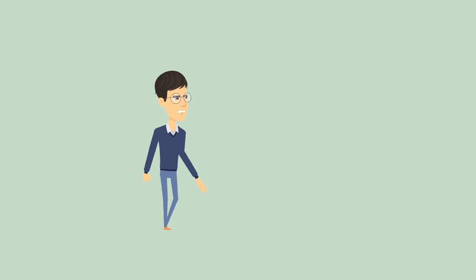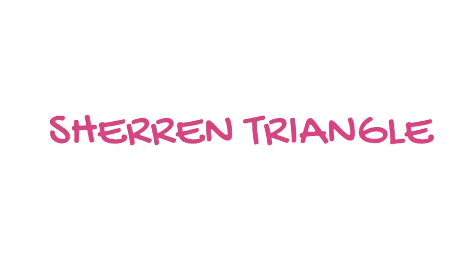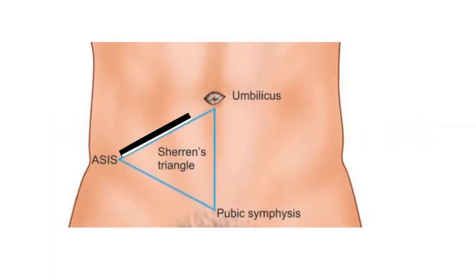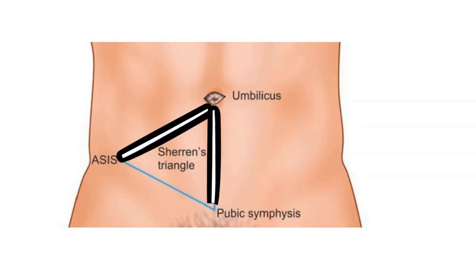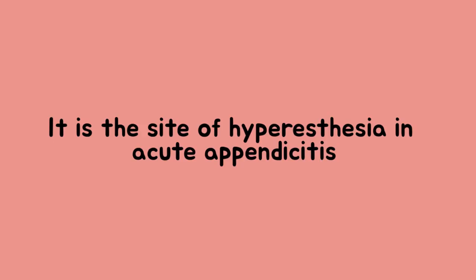Have you examined any appendicitis patient before they got operated? Yes, I'm talking about Sherren's triangle: joining ASIS to umbilicus, umbilicus to pubic symphysis, and ASIS to pubic symphysis. That is Sherren's triangle. It is the site of hyperesthesia in acute appendicitis.